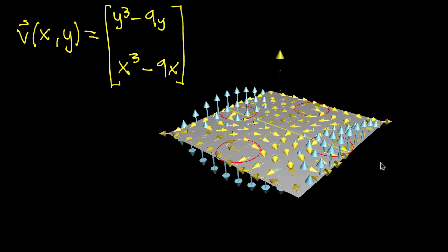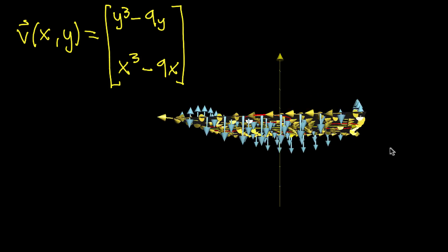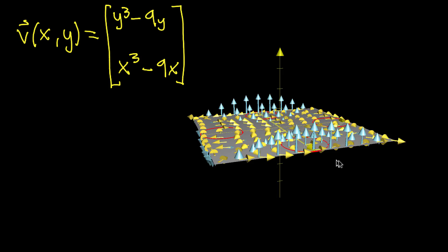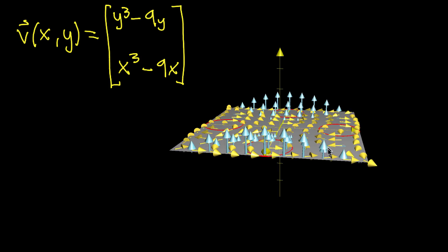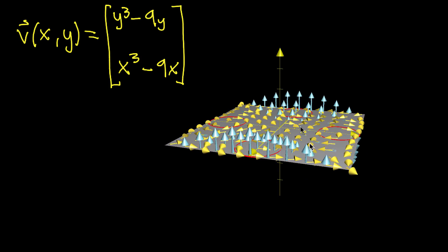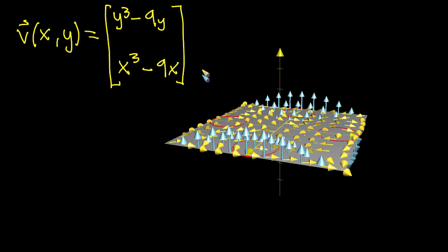So if you do this at every single point, and you kind of get an understanding of what the rotation is at every point and assign a vector, this is the field that you're going to get. And let's go ahead and describe that with an actual function.